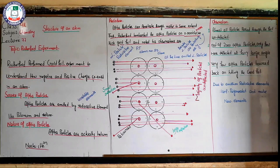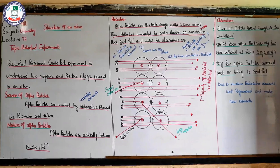The Rutherford experiment, with observation and results — after the experiment was performed, the results were released about the structure of an atom. In this lecture, we will study the Rutherford experiment with observation. What was the first part of the experiment?